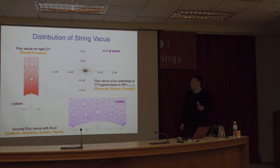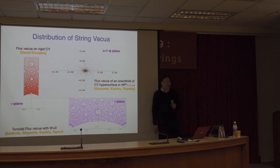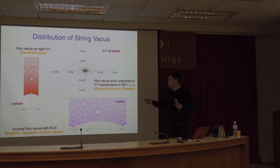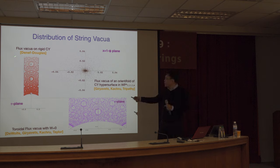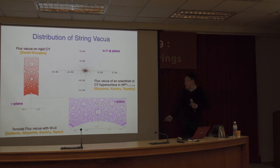In string theory, we have many light scalar fields called moduli, whose vacuum expectation values describe the size and shapes of the extra dimensions. We refer to solutions of string theory that live in this higher-dimensional moduli space as the string landscape. In simple cases with only one modulus, we can visualize the distributions on the complex plane and find interesting patterns — clusters where string vacua are densely populated, and topologically non-trivial features like voids.